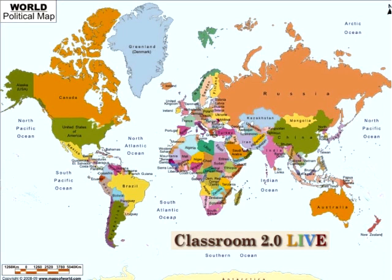We'd like to ask you some questions. The first one is: where in the world are you logging in from? I am right here in central Pennsylvania. You get your little tool from the second icon on the whiteboard tools panel — click on it to place it. Usually we have people logging in from all over the world. Today it looks like it's focused more on the Western Hemisphere.